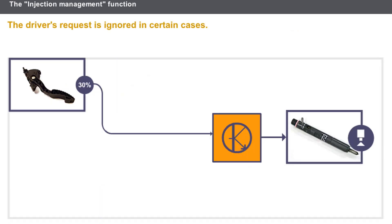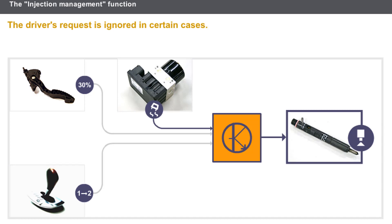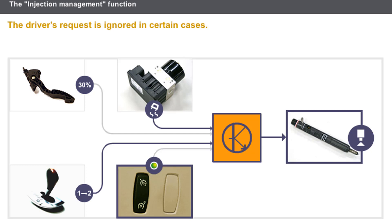The driver's request is ignored in the following cases: a request for a reduction in load by the ESP system, a torque reduction request by the automatic transmission computer, or a load request by the speed limiter cruise control. The speed limiter cruise control function is built into the injection computer.